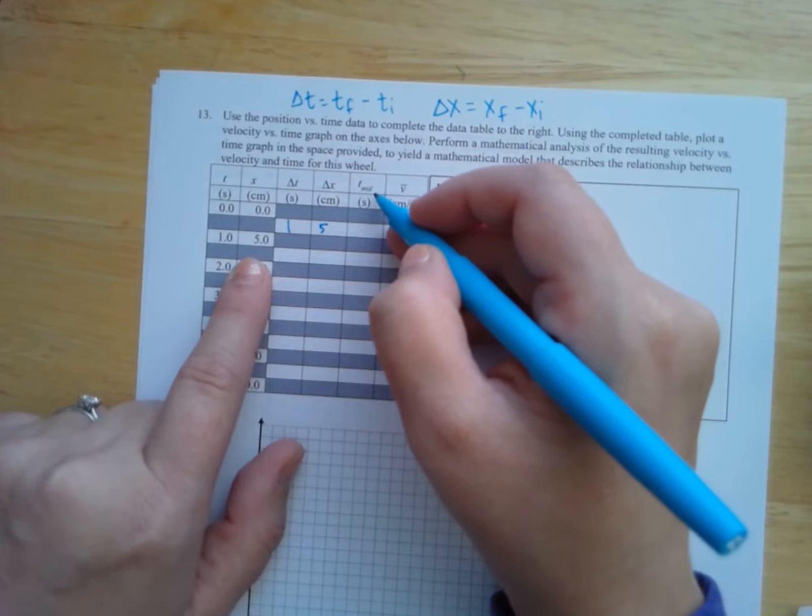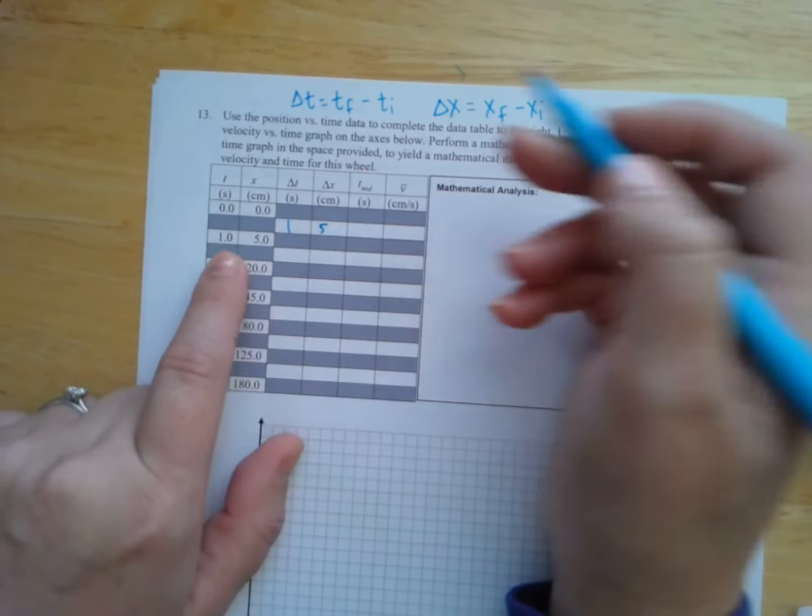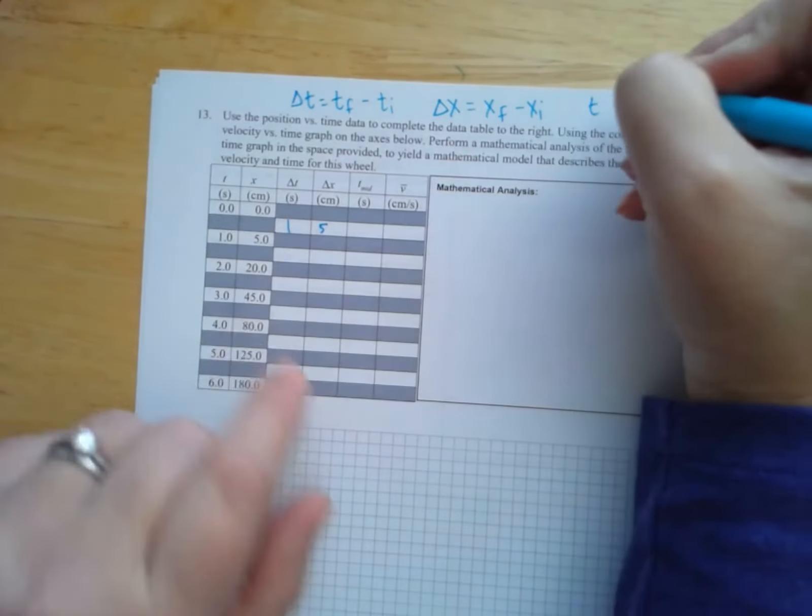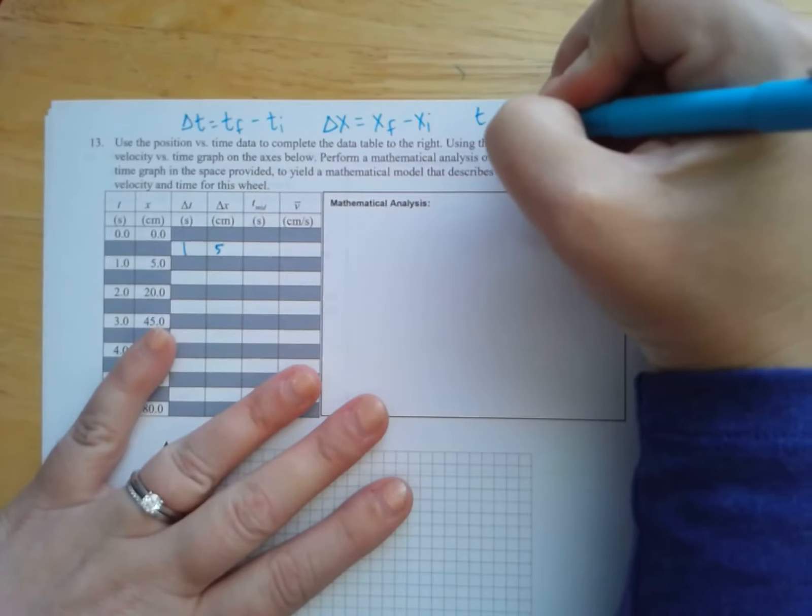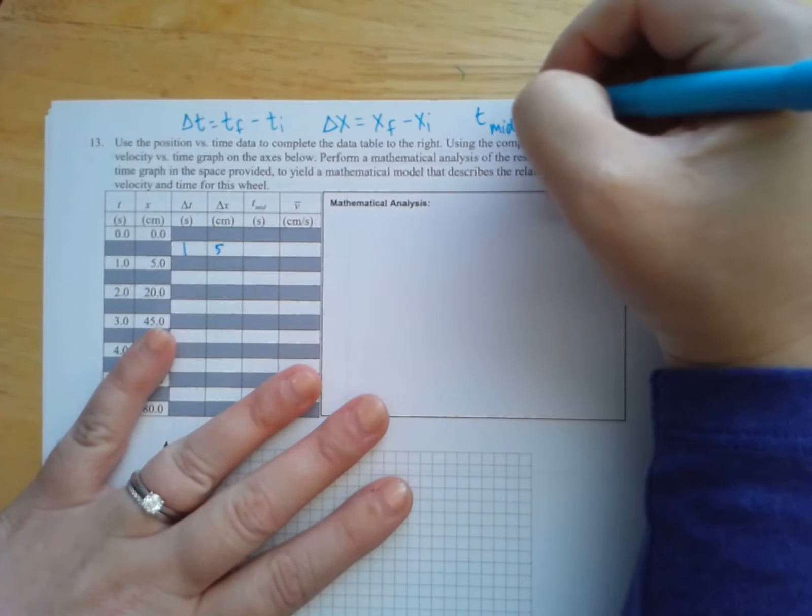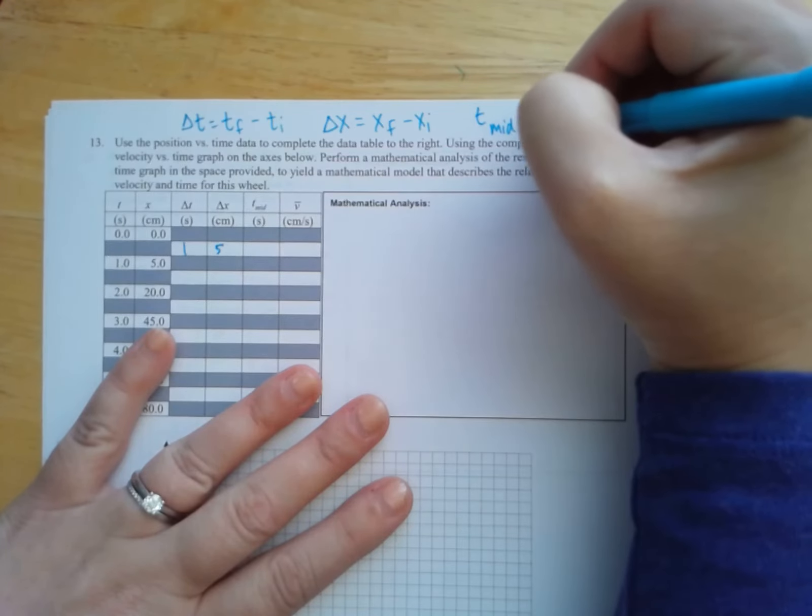T mid is the midpoint. So that's kind of, if you averaged these two, the equation for T mid looks like this. T mid equals T1 plus T2 divided by two.